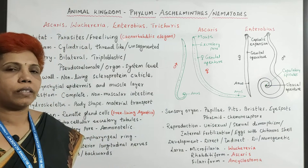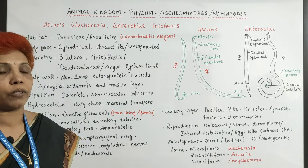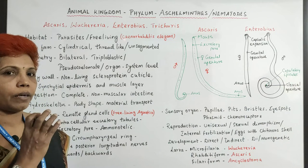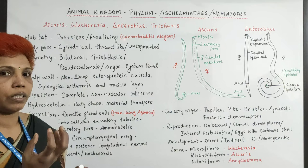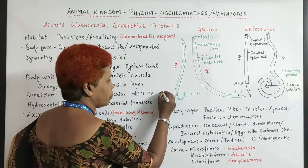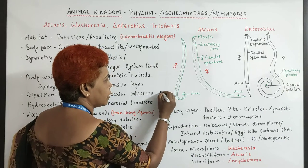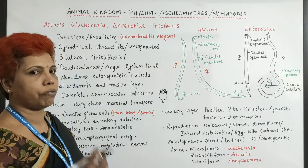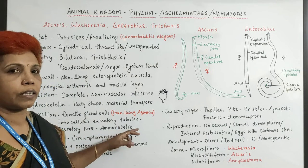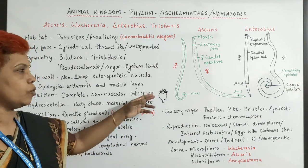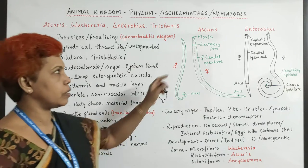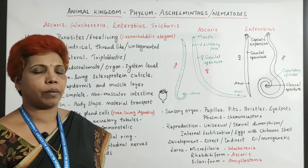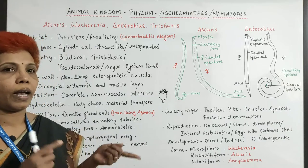Excretion is very special here. Renette glands are present in aquatic and free-living animals, and they have a protonephros — meaning only the upper part of the nephron, like glomerular filtration. Here it is called a nephrostome, and there is a special device for filtering. There are also intracellular excretory tubules that collect waste directly from cells. The excretory pore is present very close to the mouth in Ascaris. They are ammonotelic — mostly releasing ammonia — but Ascaris releases both ammonia and urea.